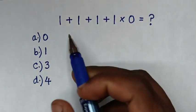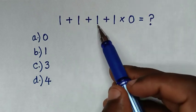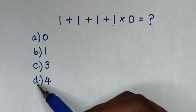Hello, you are welcome to solve this math problem which is 1 plus 1 plus 1 plus 1 times 0 by selecting the answers in A, B, C or D.